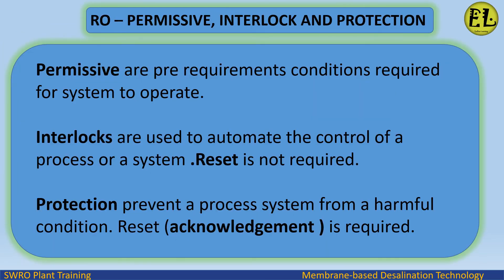Summary: Permissives are pre-requirement conditions required for the system to operate. Interlocks are used to automate the control of a process or system — reset is not required. Protection prevents a process system from a harmful condition — reset and acknowledgement are required.